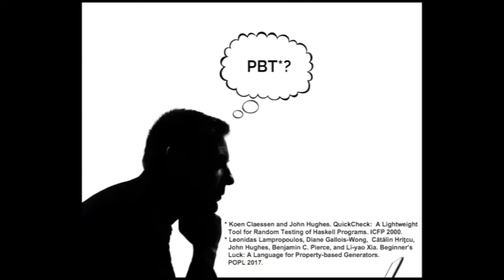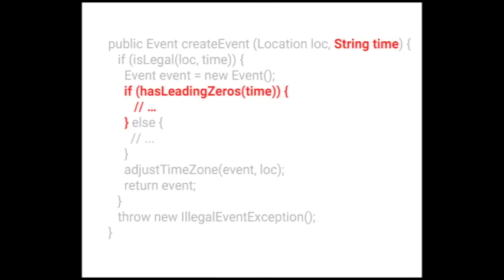So we can express this with property-based testing, using properties to say what's legal and generators to say what's different. And these tools are also great, but they have one limitation, and that's that developers have to think really hard about how to write generators for low-level data types like strings, which again, are really common service inputs at Amazon.